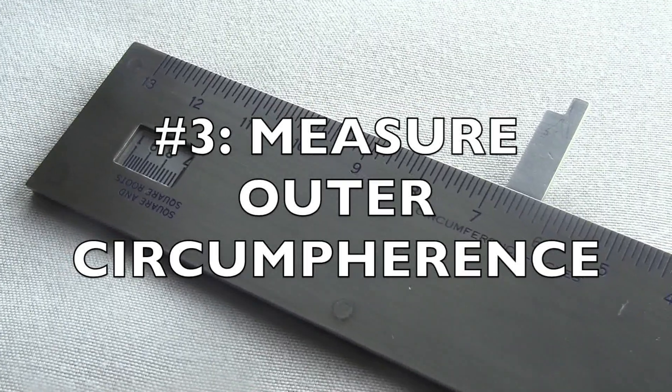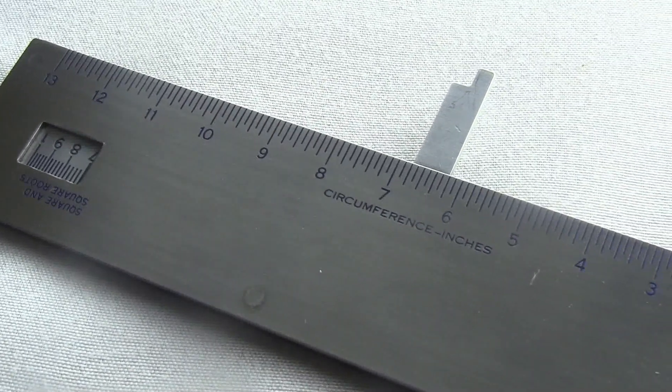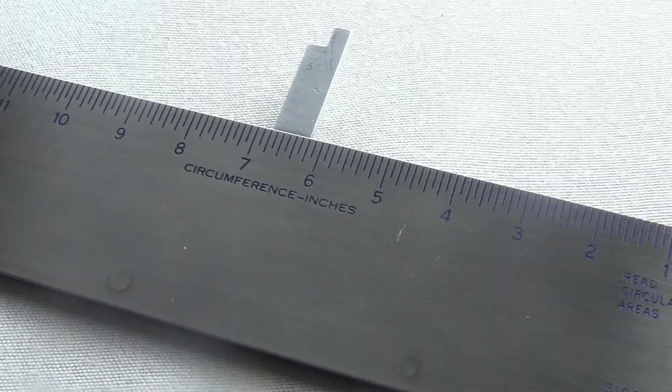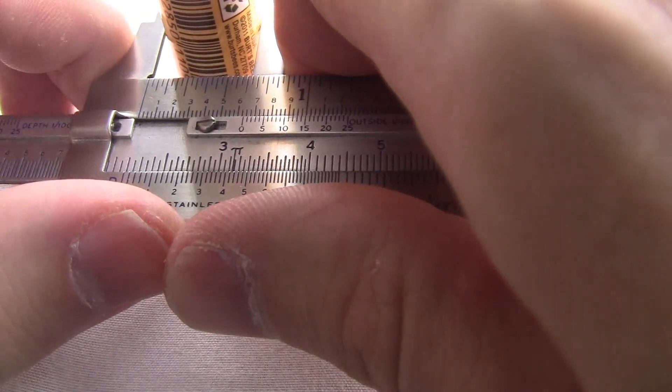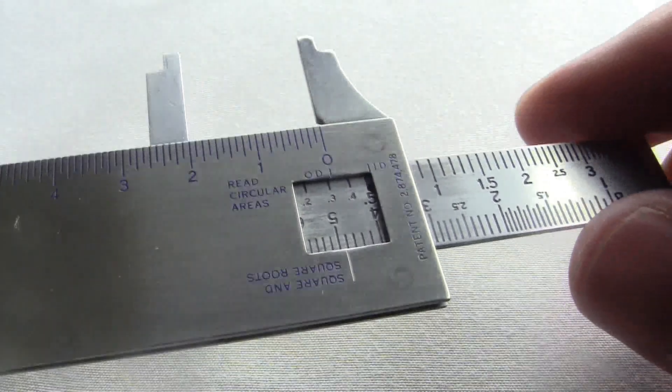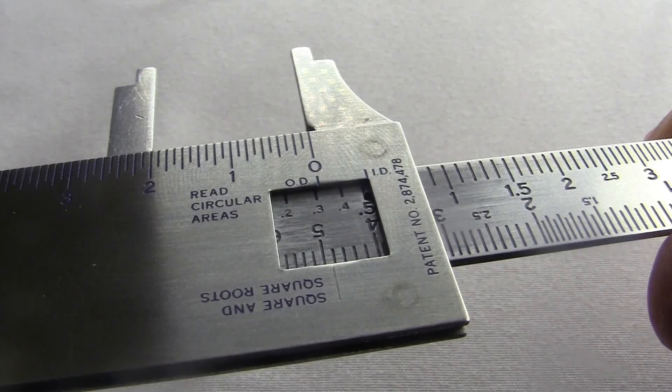Number three, measure outer circumference. What if instead of the outer diameter, you want the outer circumference? That's the distance around the circle part. Measure the outer diameter as usual with the jaws. Then you turn it over to the back to get the circumference. So this fabulous high-end beeswax lip balm tube is right about 2 inches around.